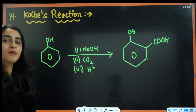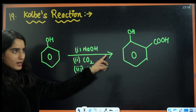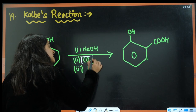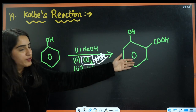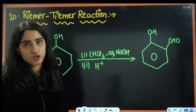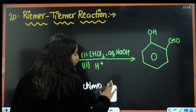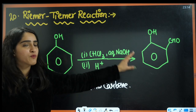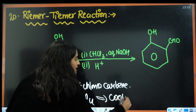Next is Kolbe's reaction. We have phenol converted to sodium phenoxide with NaOH, then CO₂ acts as the main electrophile. After acidification, we get salicylic acid. The next reaction is Reimer-Tiemann reaction, which is similar. The intermediate formed is dichlorocarbene. Using CCl₃ with aqueous NaOH gives salicylaldehyde; using CCl₄ gives salicylic acid.